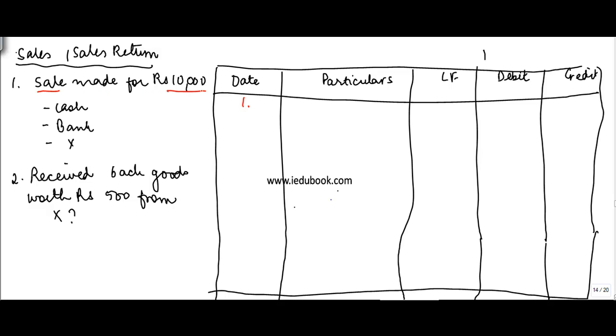Sale made for Rs. 10,000 cash and bank. I'll take them together. So when you make a sale for Rs. 10,000 and you get cash or bank, there are two accounts which are involved. Quickly identify them. Yes, you are correct. One is cash or bank account and the second is sales account.